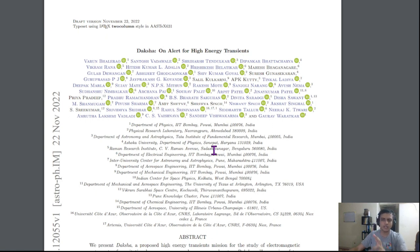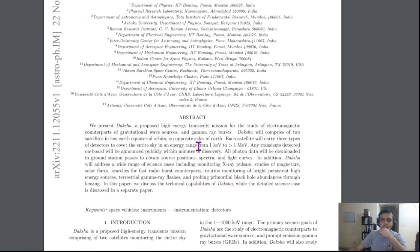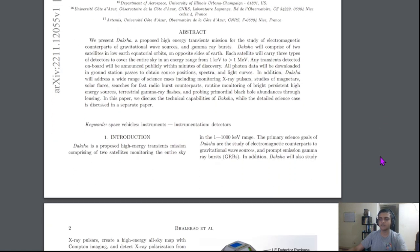Let us go through the two papers. The first paper is on the instrumentation. The energy range of Daksha is going to be 1 keV to 1 MeV and there are three detectors to cover up this energy range with high sensitivity.